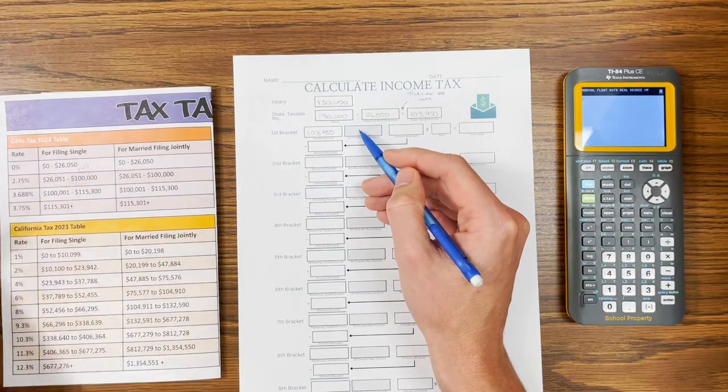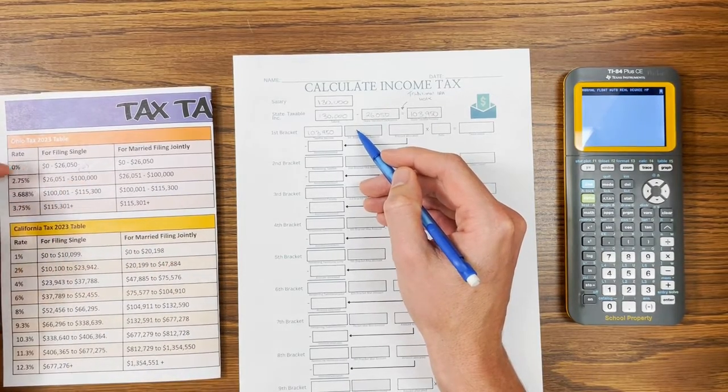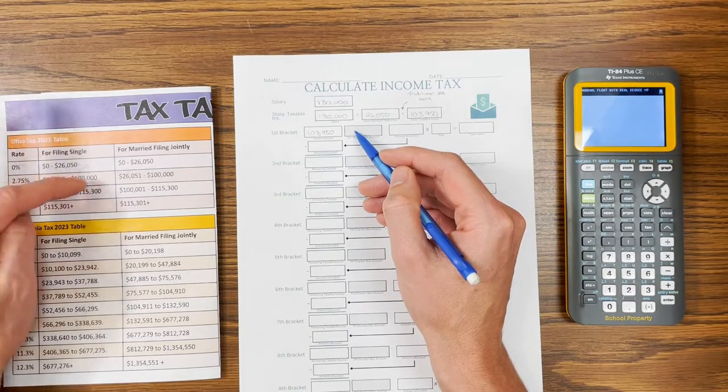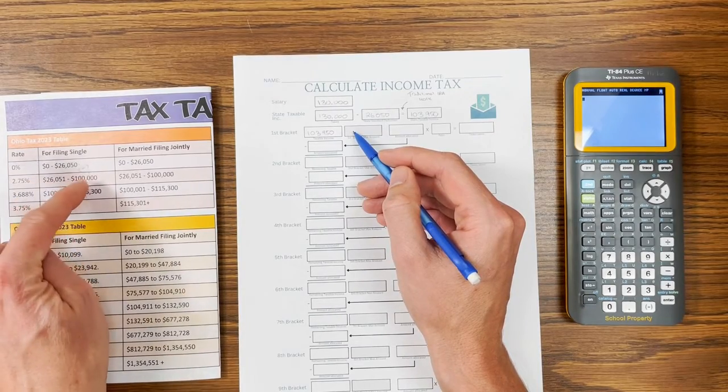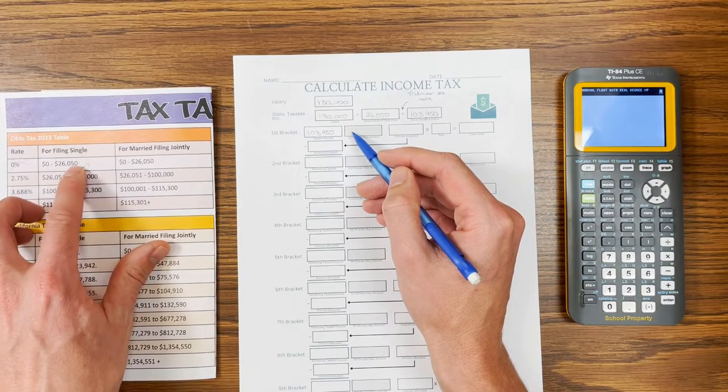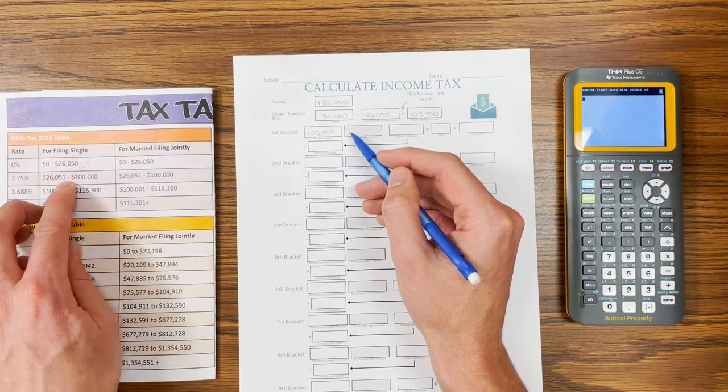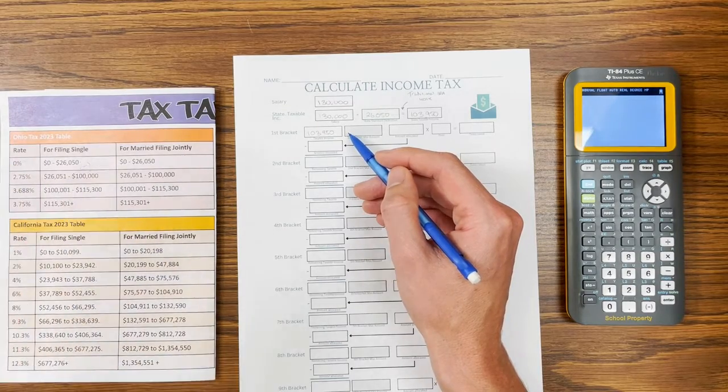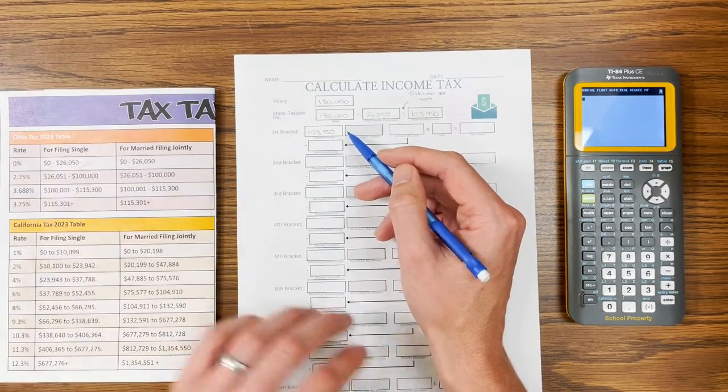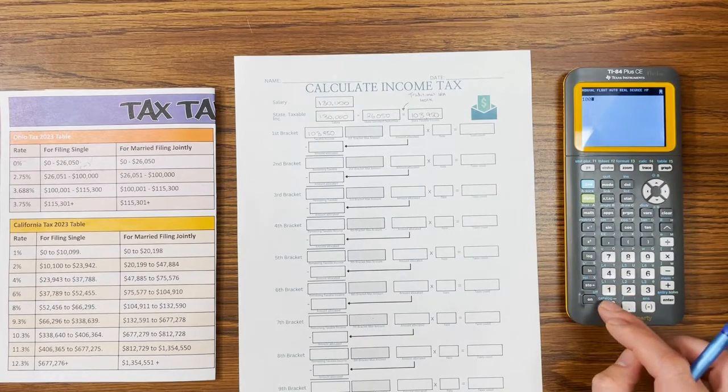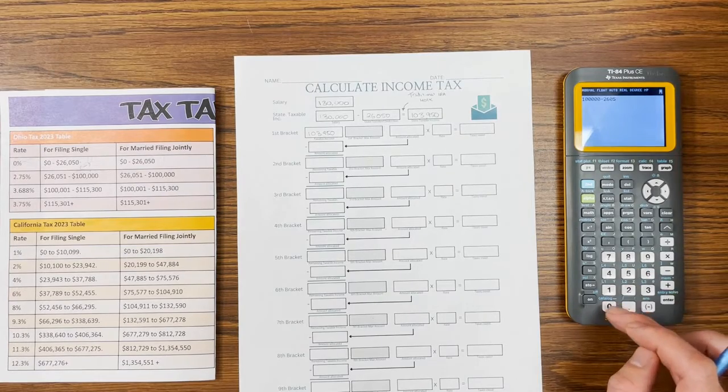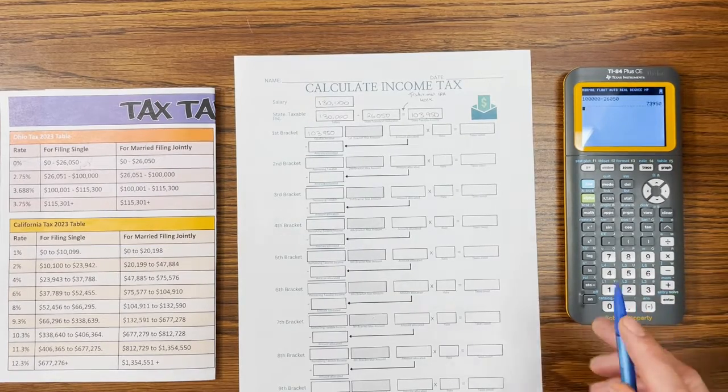The first bracket, now the way the brackets work is we've already done the 0% one. We made that our standard deduction. We look at how much the bracket holds. That's calculated by doing the higher number minus the lower one. In our case, we're going to do $100,000 minus the previous high number because that's what we technically taxed. That extra dollar is saying it's from $26,051 to $100,000, so it's inclusive. We want to subtract those two to get the true amount. So we have $100,000 minus $26,050, and we have $73,950.